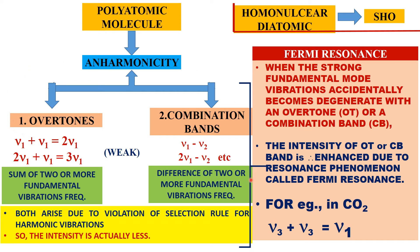These two are weak because they arise due to violation of the selection rule — they are not allowed by the selection rule. Therefore, the intensity of these bands is actually less.